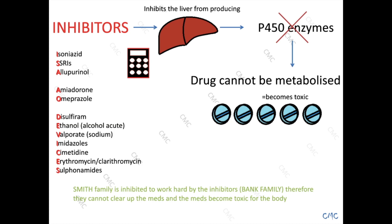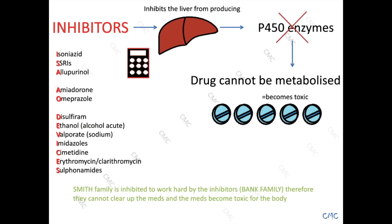Going back to our little story: the Smith family is inhibited from working hard by the bank family. The bank family is counting on suppressing the workings of the Smith family, trying to make the most out of the medications you put in. But they're not realizing that when you stop the P450 enzymes from doing their jobs, the medication only builds up and becomes toxic.